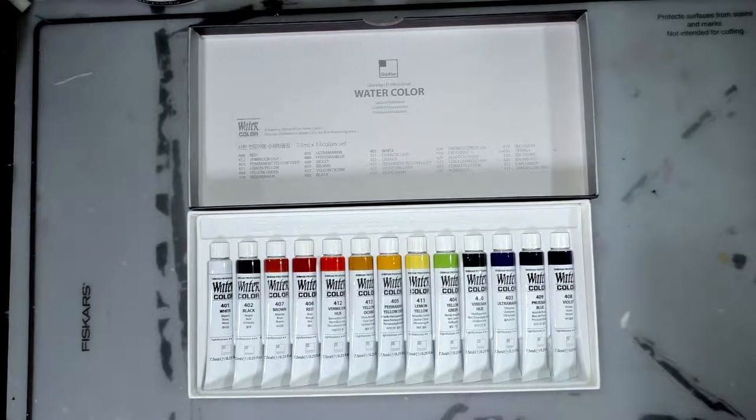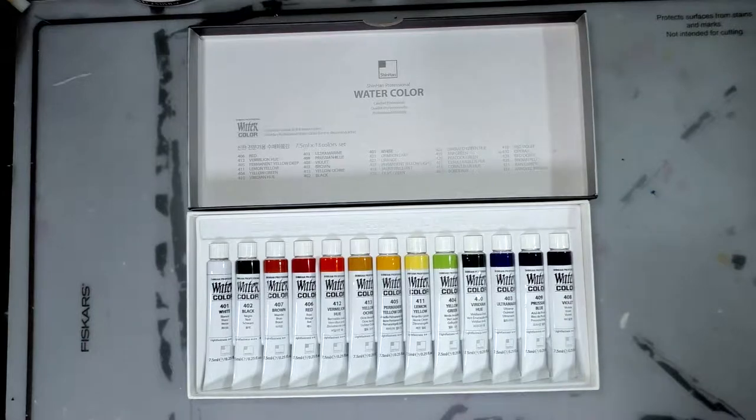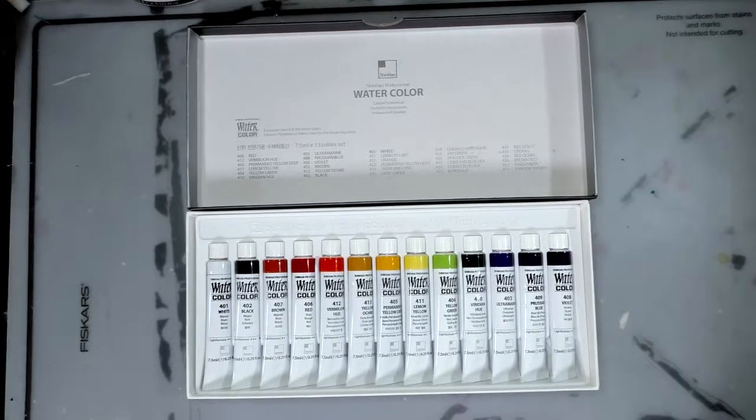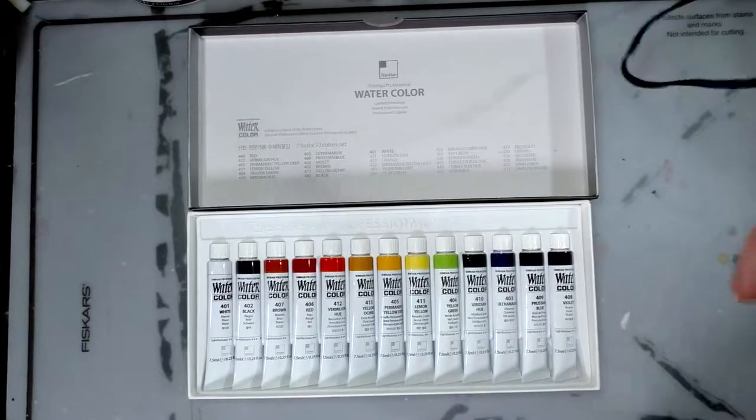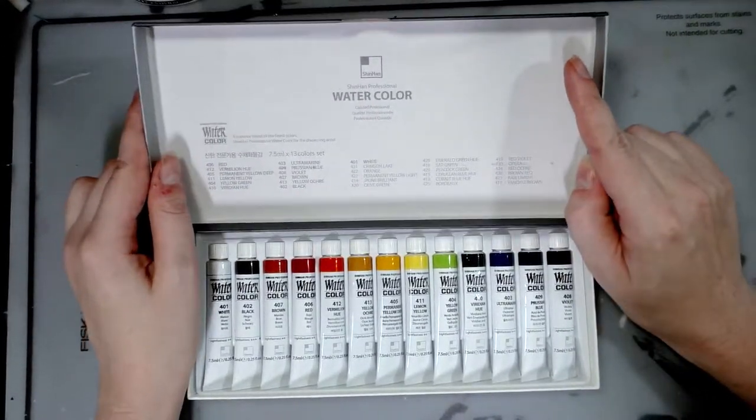Inside we have our 13 colors including white: white, black, brown, red, vermilion hue, yellow ochre, permanent yellow deep, lemon yellow, yellow green, viridian hue, ultramarine, prussian blue, and violet. We've got a pretty good range of colors.